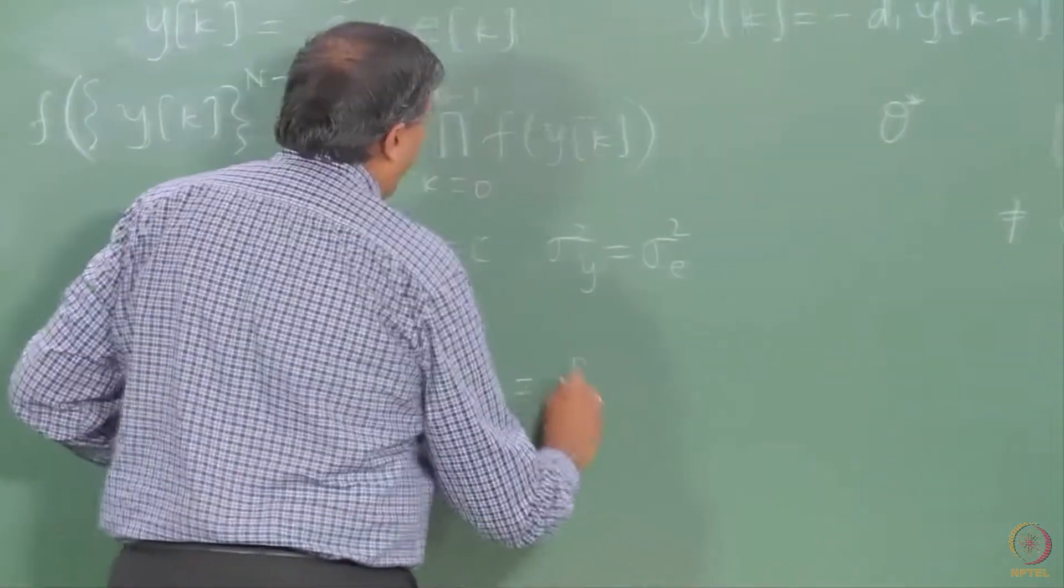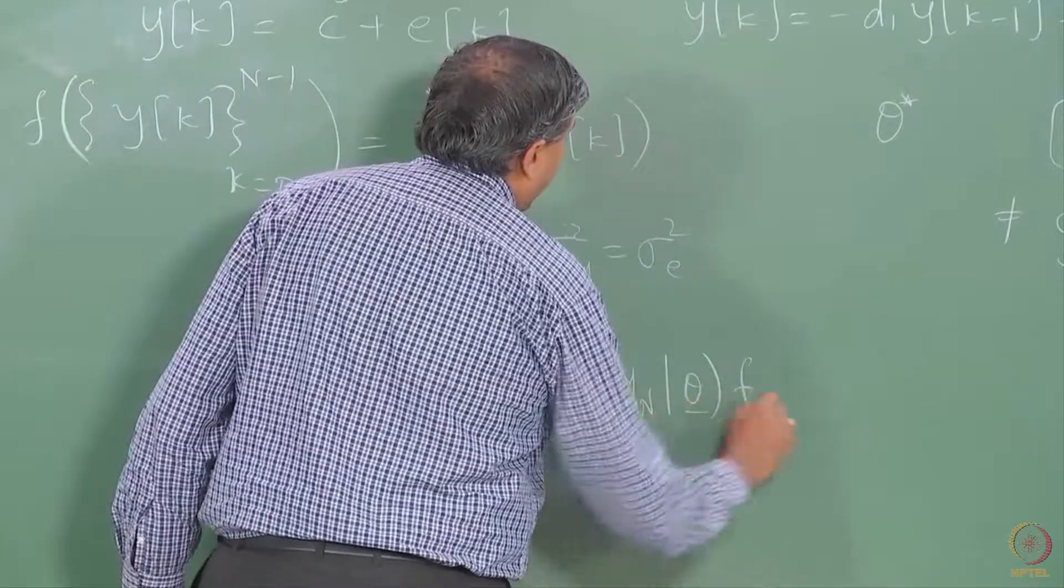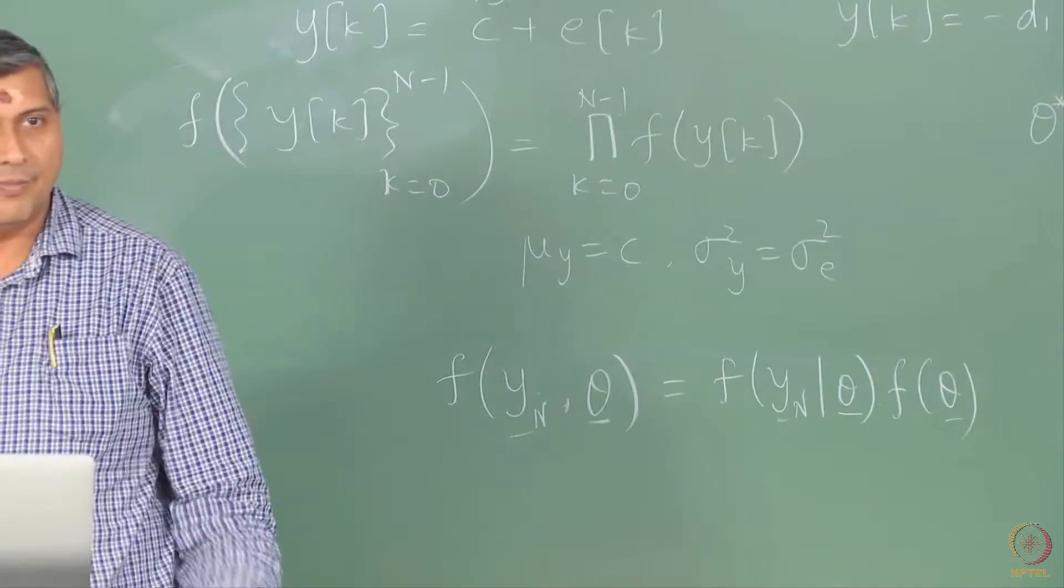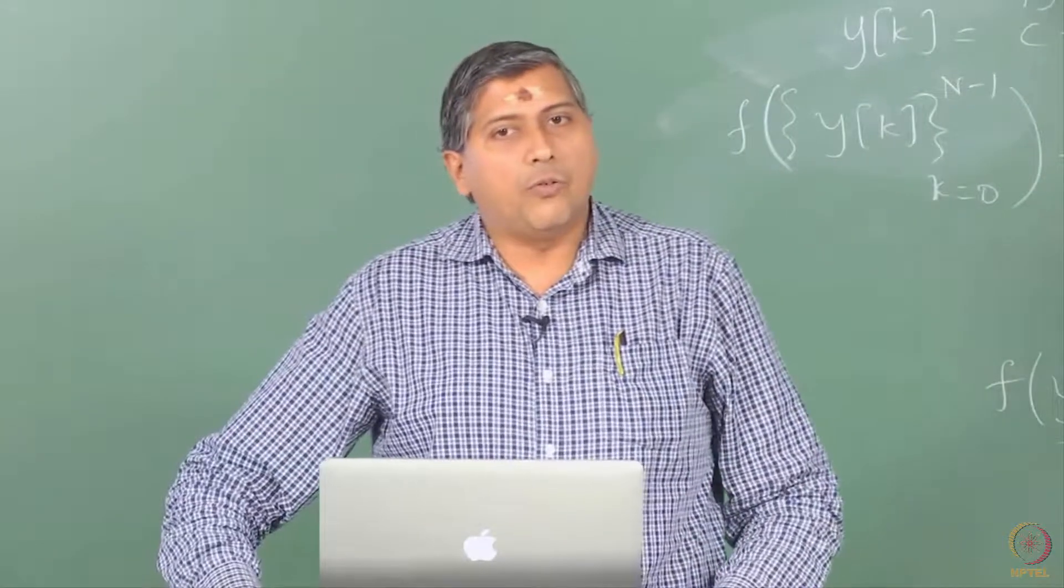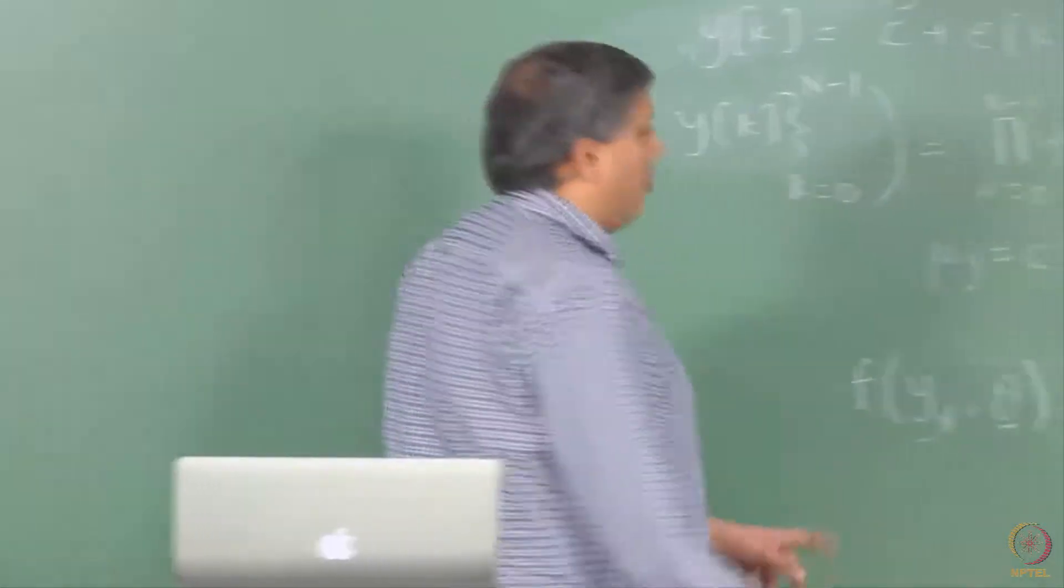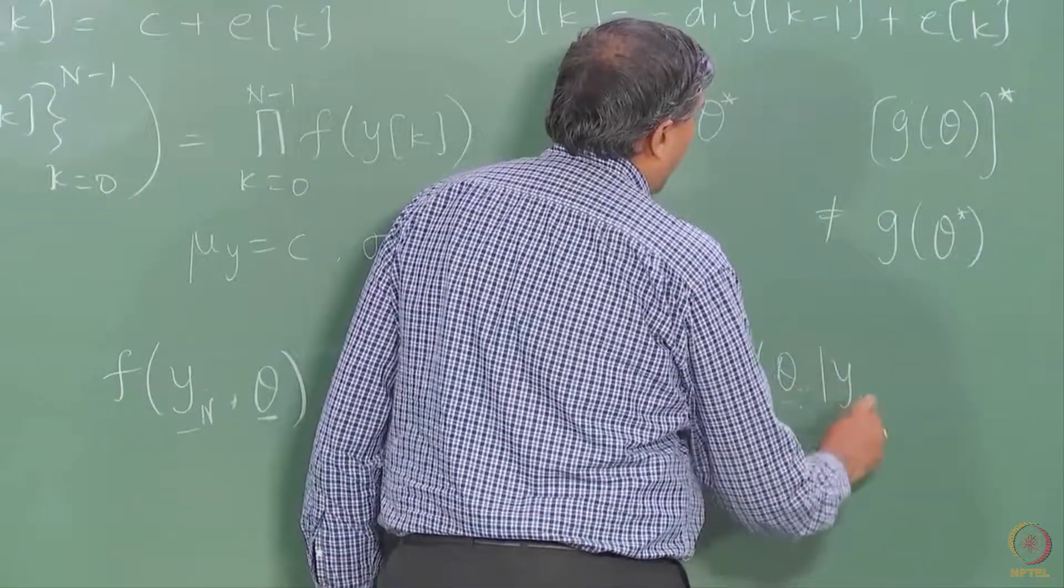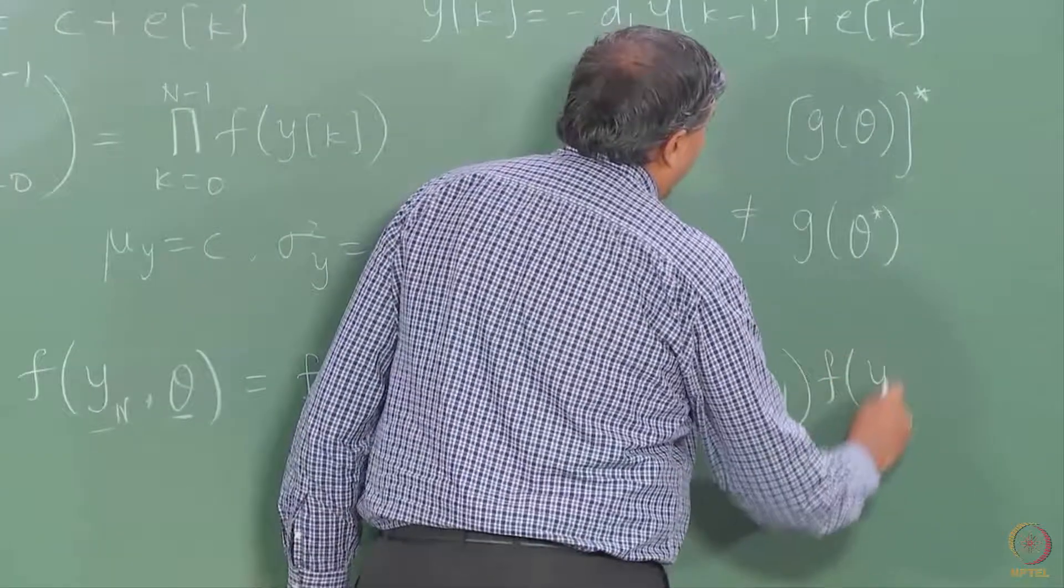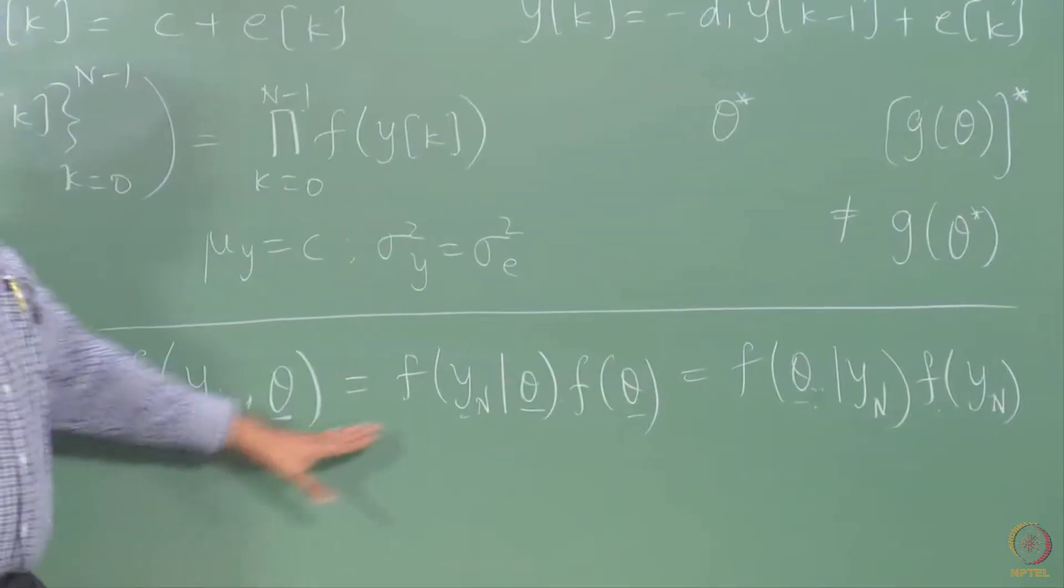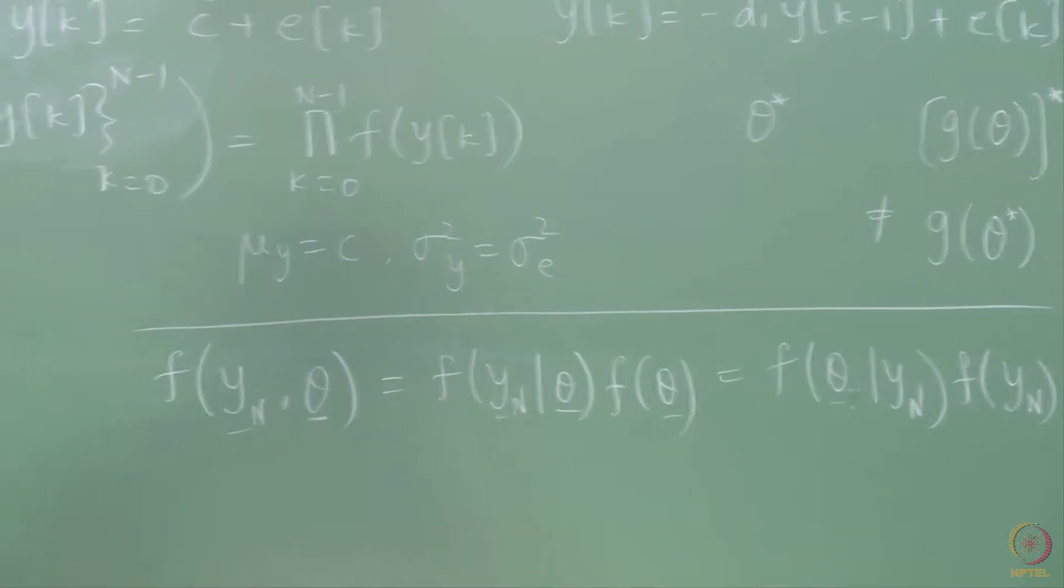I can write this as f(y|theta) times f(theta). It is understood that this is marginal. This is one way of writing it, am I right? What is the other way of writing this joint PDF? f(theta|y). So this is also equal to f(theta|y) times f(y). Again, this is a marginal. These identities are the ones that are being written. This identity is the one that has been written there for you.